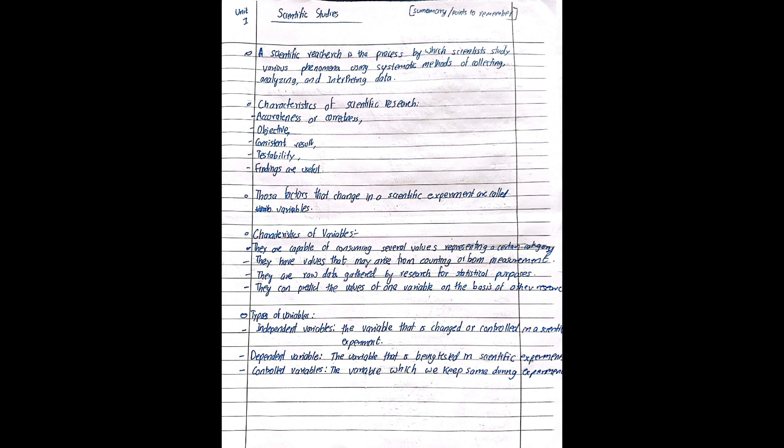I will start with scientific research. Scientific research is a process by which scientists study various phenomena using systematic methods of collecting, analyzing and interpreting data. Scientific research is a process by which you study various phenomena using systematic methods of collecting and analyzing data.